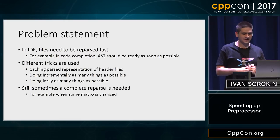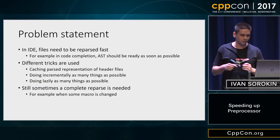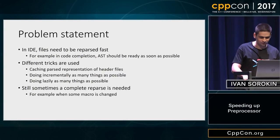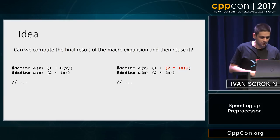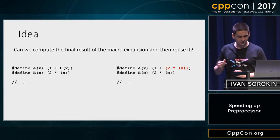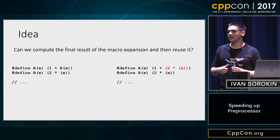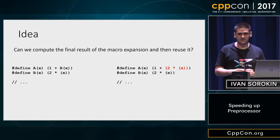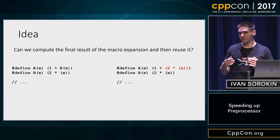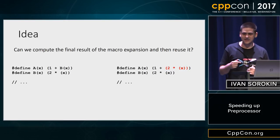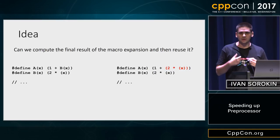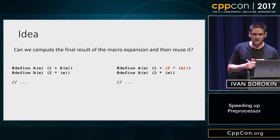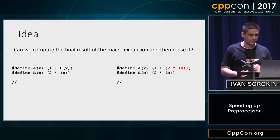Unfortunately, sometimes these tricks don't work and we need to fall back to a full reparse. That's the process where the preprocessor took a significant share of time. So, we thought about how we can speed up the preprocessor. Let's consider two macros A and B as shown on the left. Every time A is expanded, the preprocessor notices that B is inside and it expands B too. The question is: can we compute the final replacement for macro A and then apply it at each expansion of macro A?